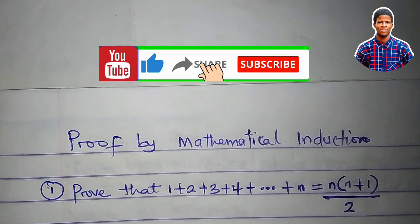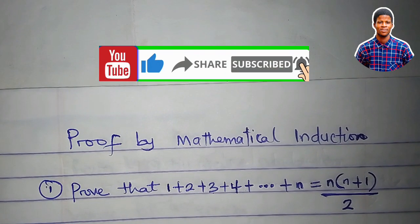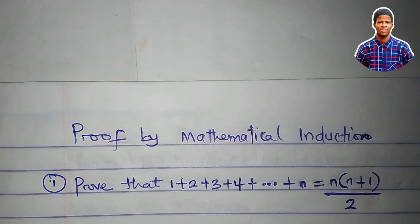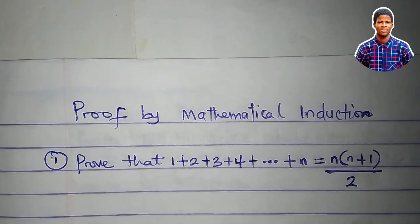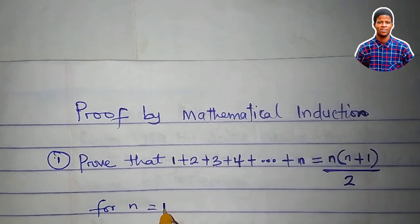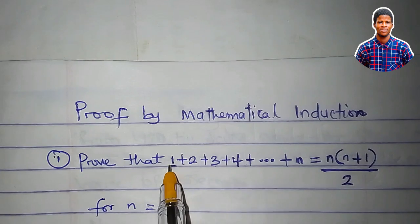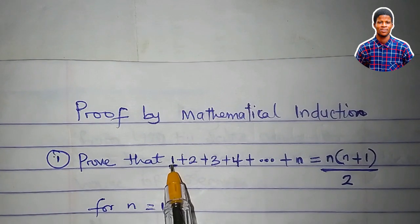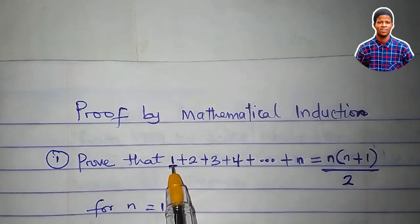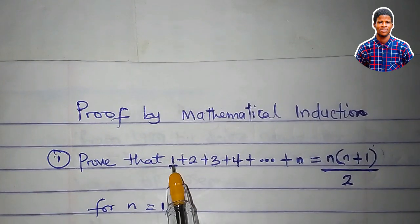There are three steps that we'll use to prove by mathematical induction. The first step is to show that it is true for n equal to 1. For n equal to 1, you can see that I have 1 at the left-hand side. So what I want to do is to plug in 1 into this expression at the right-hand side. If it gives me 1, which is equal to what is at the left-hand side, then it is true for n equal to 1.